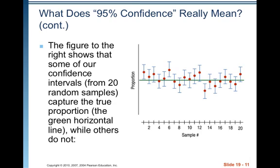A figure shows 20 random samples: some confidence intervals capture the true proportion — shown as a green horizontal line — while others do not. Say 20 different researchers gathered data and found their sample proportions. Unknown to them, there is a true population proportion, shown as the green line. The p-hats are scattered above and below the true proportion.